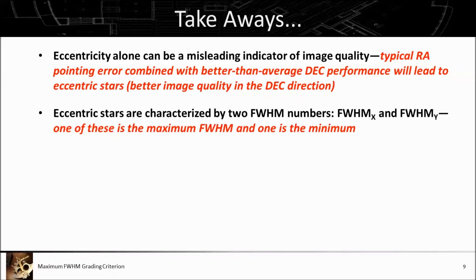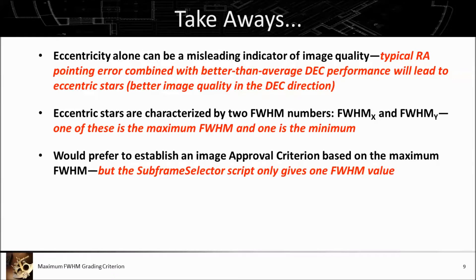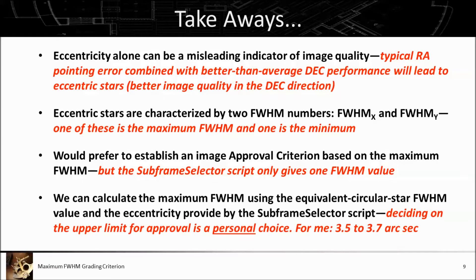Eccentric stars are characterized by two FWHM numbers — a maximum and a minimum — which may be in X or Y depending on how the star is oriented. I prefer to have an image approval criterion based on the maximum FWHM. The subframe selector script only gives us one value, but we found out that value is actually a function of the two FWHMs for an elliptical star, and it's quite easy to convert those using the eccentricity to come up with the maximum FWHM as a grading criterion.